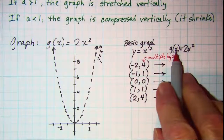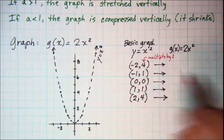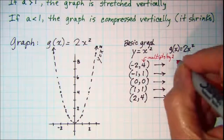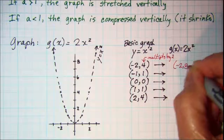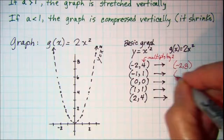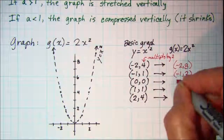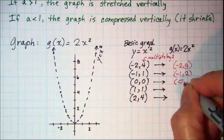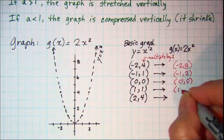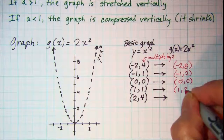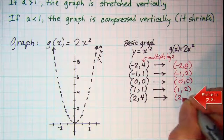So our g of x graph will have the point negative 2, 8; negative 1, 2; 0, 0; 1, 2; and 2, 8.